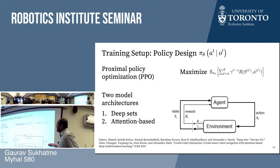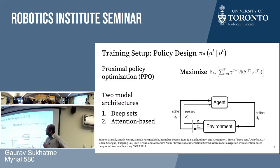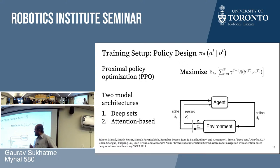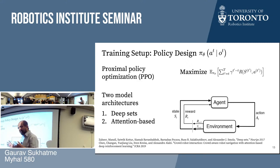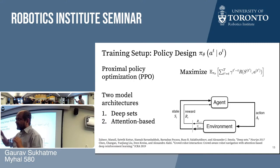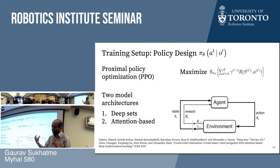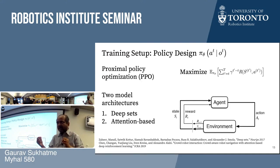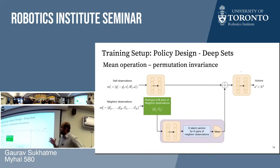The training setup maximizes expected sum of discounted reward using PPO, just like the single-rotor work. The policy is parameterized by a neural network. We experiment with a couple of different neural network architectures, and I'll talk through why. A key design question: how do you treat your neighbors architecturally?